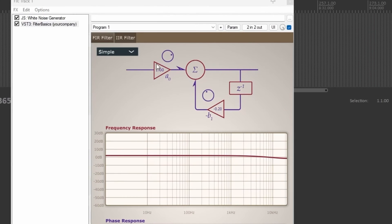The coefficient a0 acts almost like a general gain control of the filter here. It doesn't seem to affect the filter response at all.